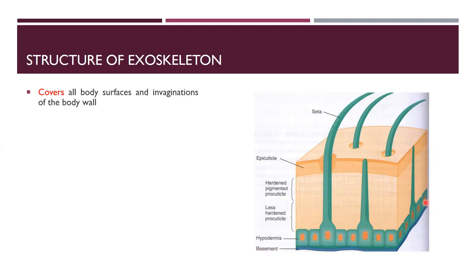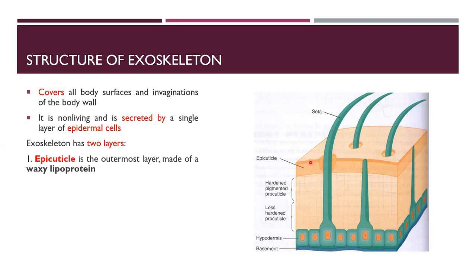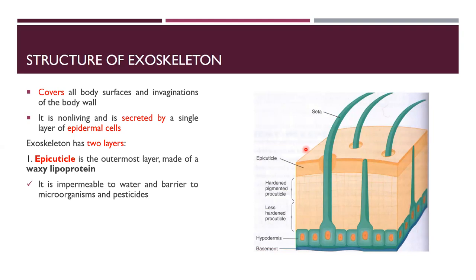If we look at this diagram, the exoskeleton covers the full body. It is non-living — exoskeleton is a non-living part secreted by epidermal cells, specifically the hypodermis. It has two layers. The first is the epicuticle, which is the outermost layer composed of lipoproteins. Its function is that the exoskeleton makes the body externally impermeable to water, and it creates a barrier against microorganisms and pesticides.